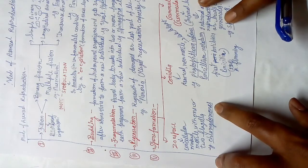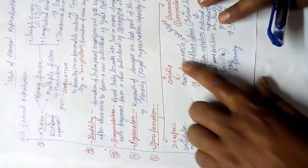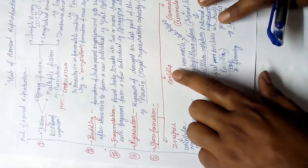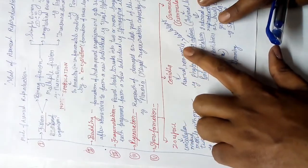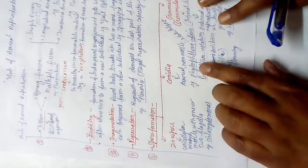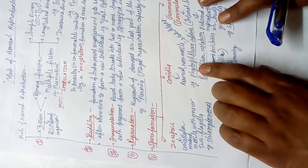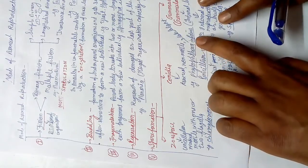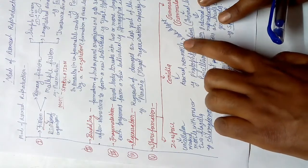Chlamydomonas also has a proteinous body called a pyrenoid. Conidia are asexual, non-motile structures. These are very important. Examples include Phytophthora — full name Phytophthora infestans — which causes the fungal disease called late blight of potato, where the leaves of the potato get burnt or damaged.